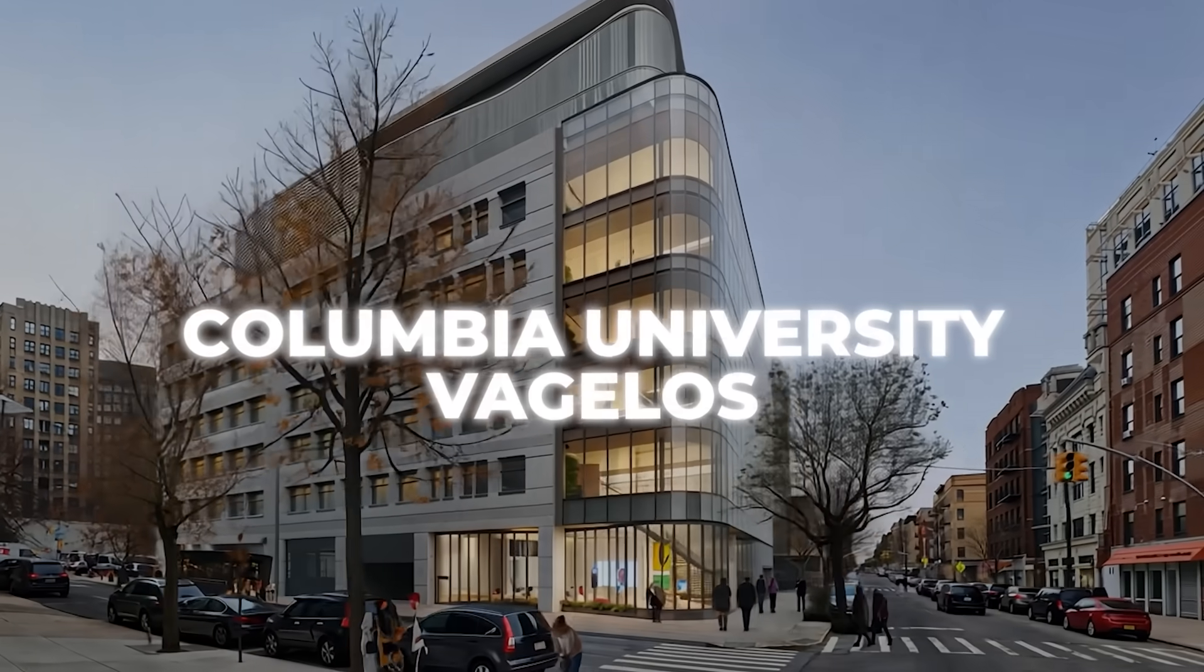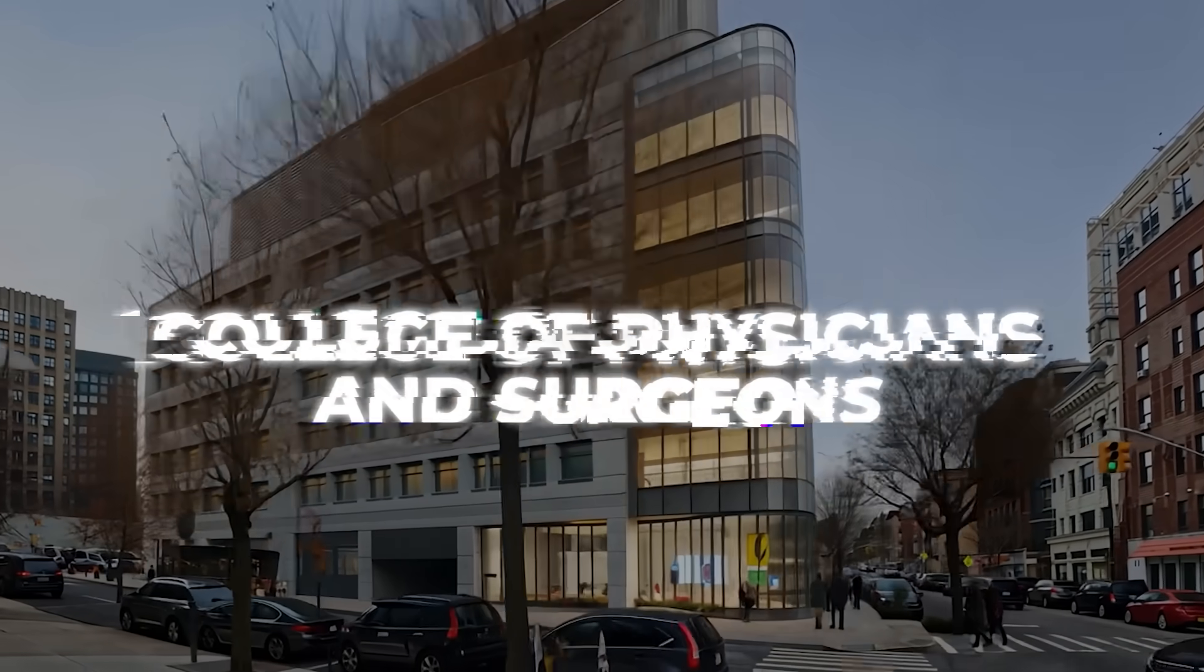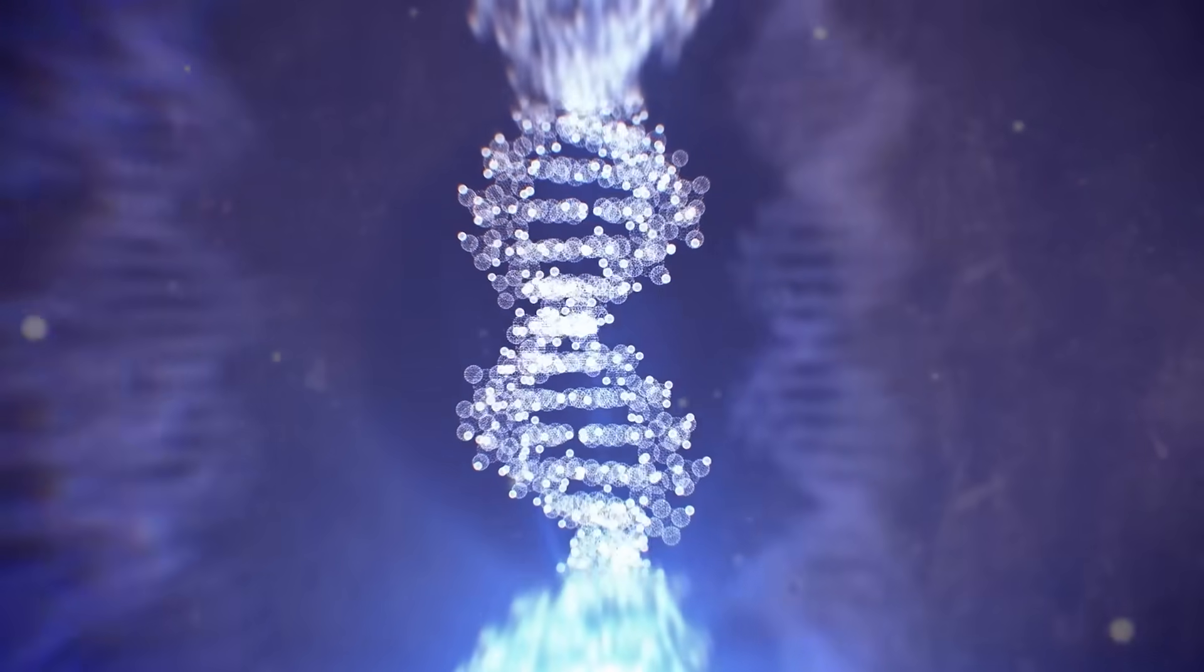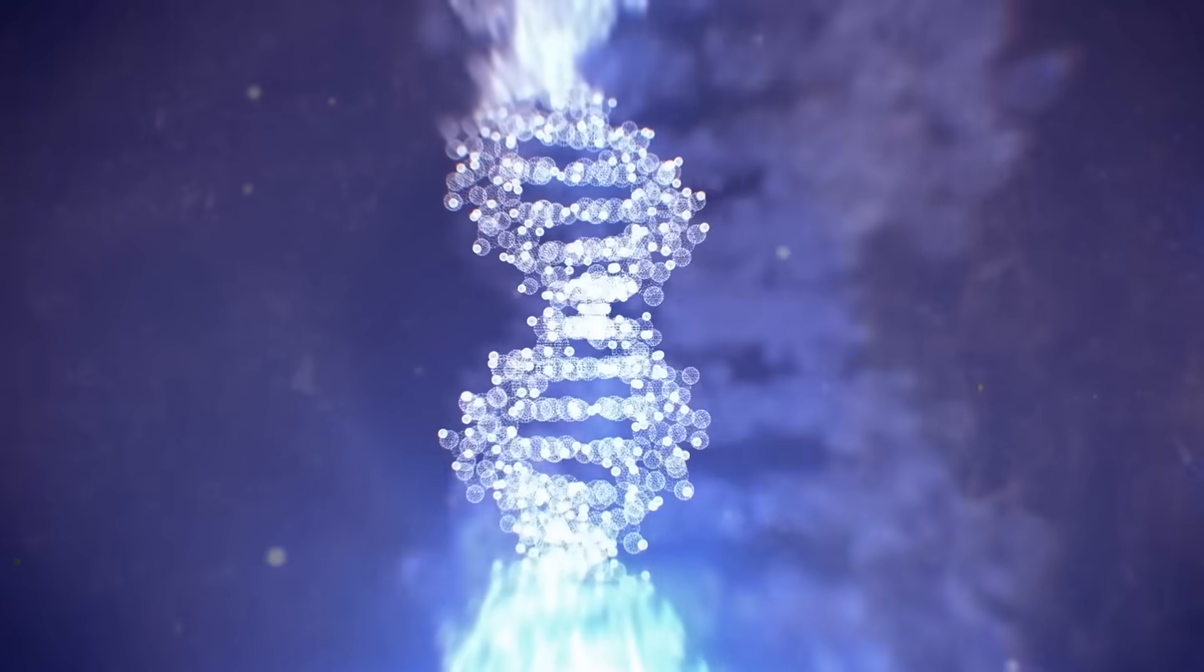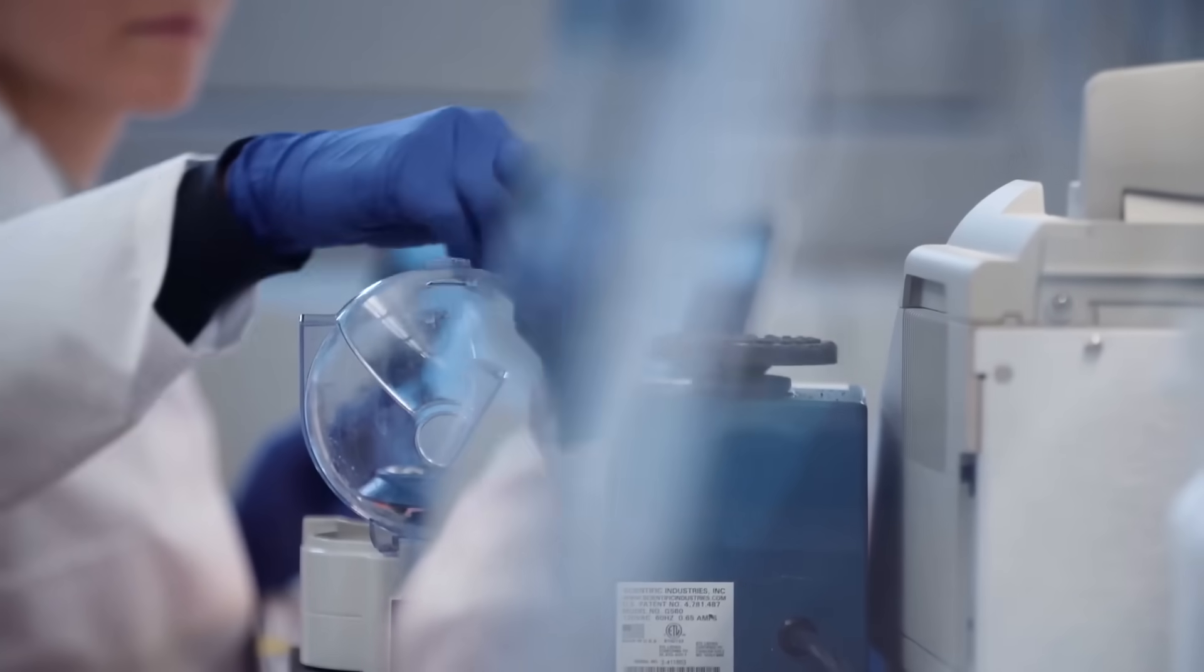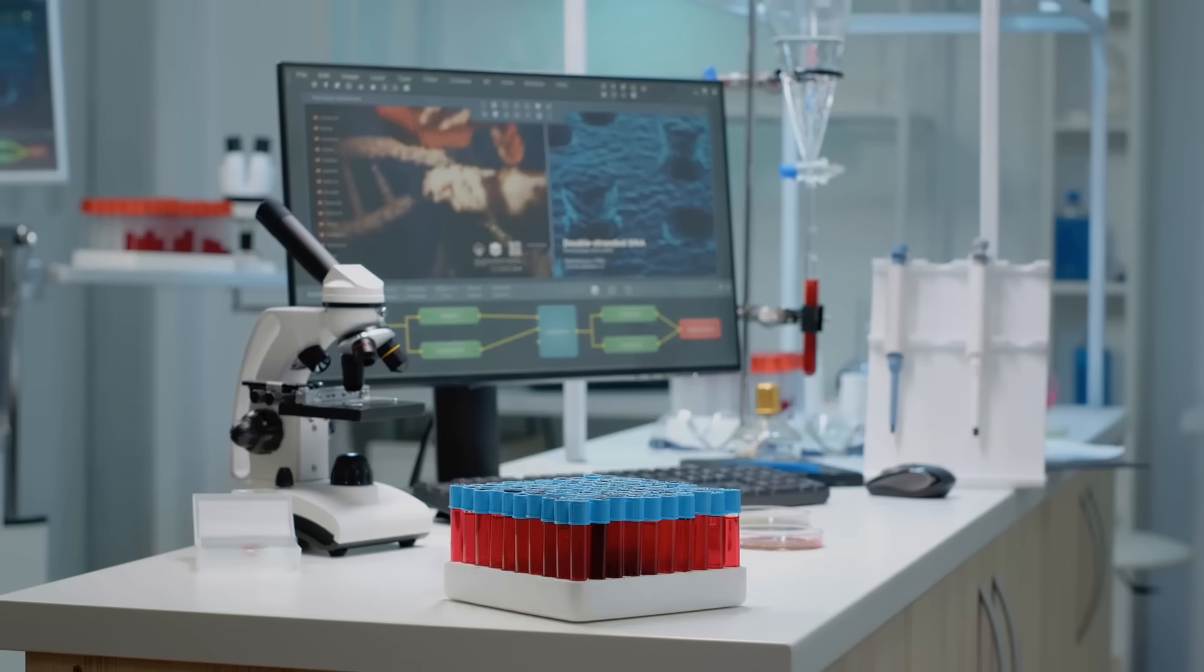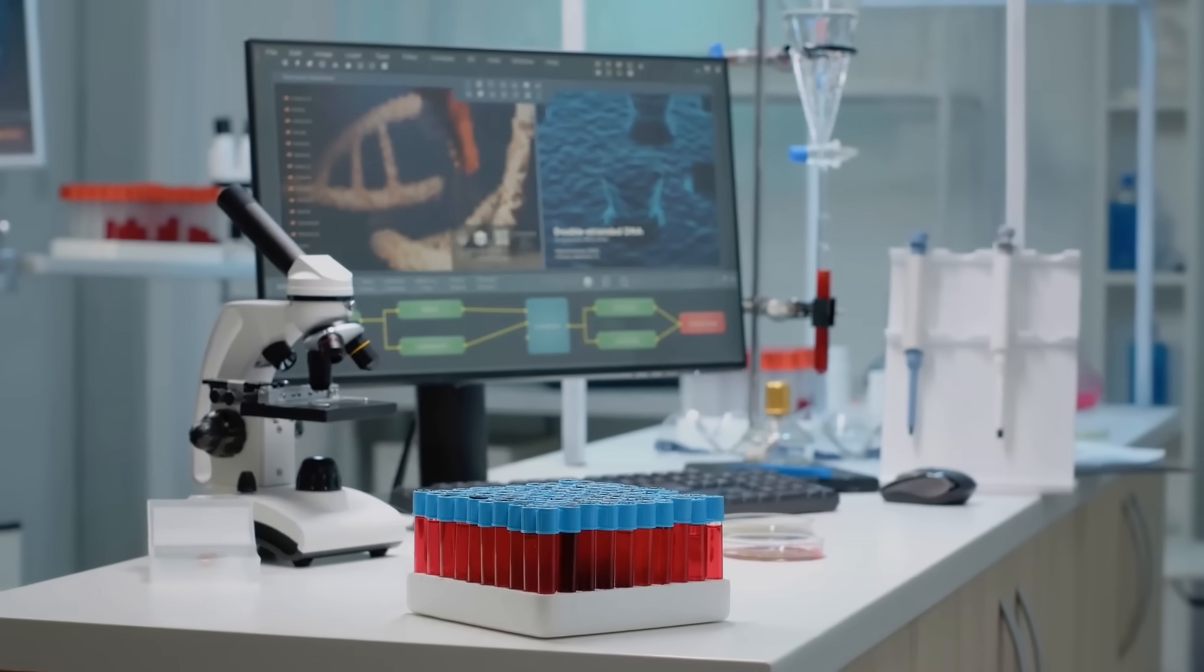First, let's talk about the project from Columbia University Vagelos College of Physicians and Surgeons, where researchers built a new AI method that predicts gene activity in any human cell. Just imagine that, a system that can look at any cell type, normal or diseased, and predict exactly which genes are switched on.